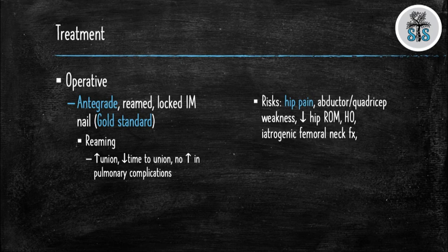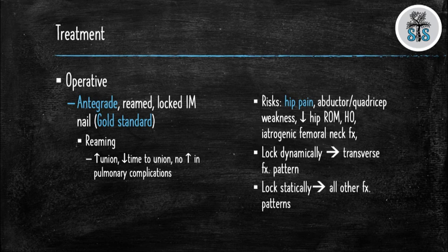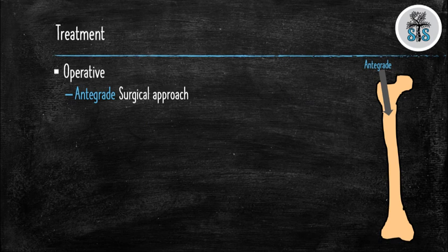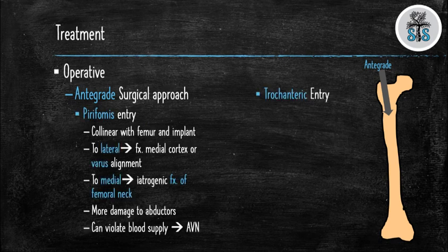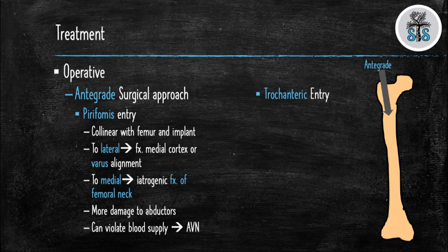There are several risks when placing an antegrade nail: increased risk of hip pain, weakness in the abductors and quadriceps, decreased hip range of motion, heterotopic ossification, and iatrogenic femoral neck fracture. Lock the nail dynamically if the fracture is transverse; otherwise lock it statically. There are two entry points for an antegrade nail: piriformis or trochanteric. An advantage of the piriformis entry point is that the implant is collinear with the femur. However, placing the nail too laterally risks fracturing the medial cortex or varus deformity; too medially increases risk of iatrogenic femoral neck fracture. Additionally, the piriformis entry point damages the abductors more than the trochanteric starting point, and the blood supply can be disrupted, leading to avascular necrosis of the femoral head.